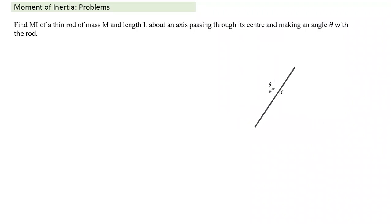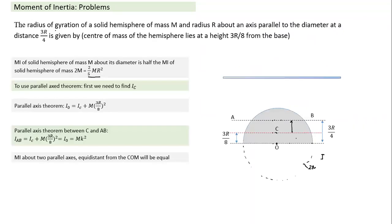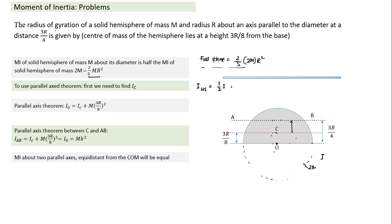Student question clarified: for a full sphere of mass 2M, moment of inertia = 2/5·(2M)·R². The two hemispheres are symmetrical about the diameter axis, so each hemisphere has half the full sphere's moment of inertia, giving 2/5·M·R² for each hemisphere, where M is the mass of the hemisphere.